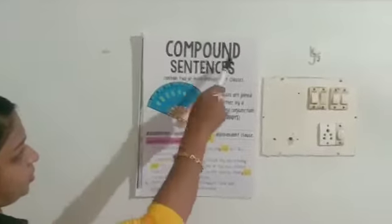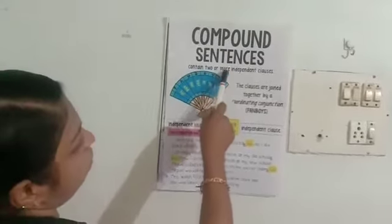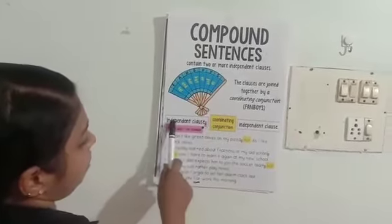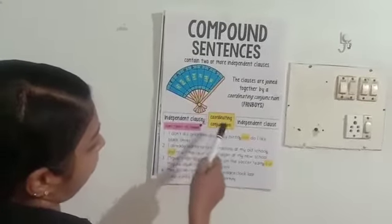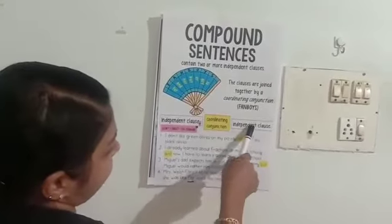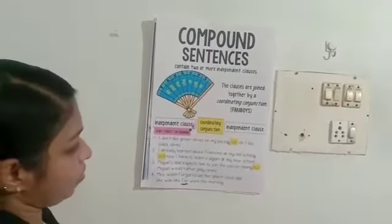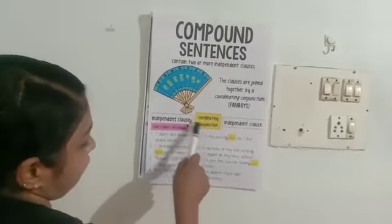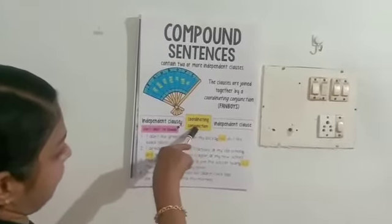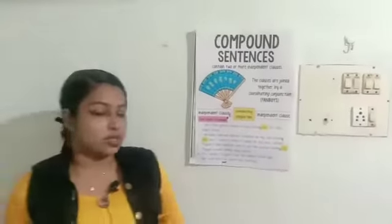So first, you have to study what a compound sentence is. Compound sentences contain two or more independent clauses, and the structure is: independent clause, comma, coordinating conjunction, plus one more independent clause — two independent clauses. In the middle of these two clauses, you use a coordinating conjunction. This is how you create a compound type of sentence.